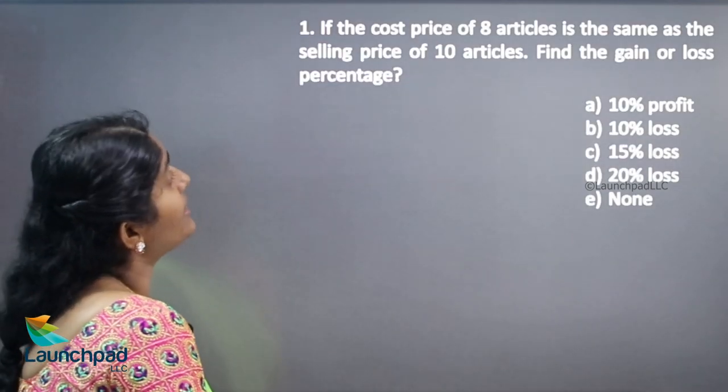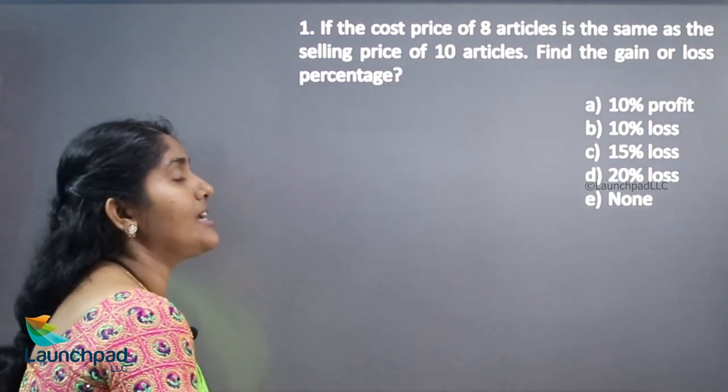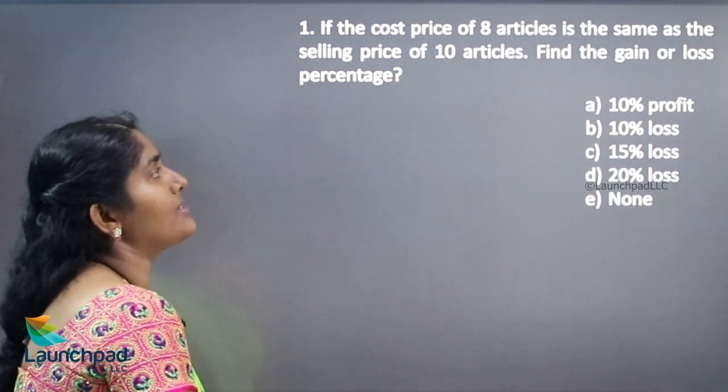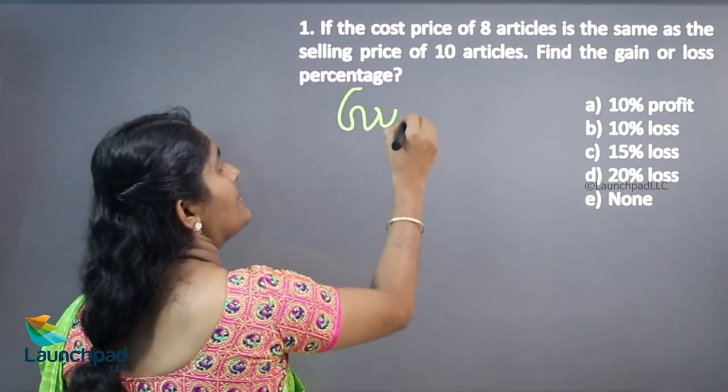And your question is, if the cost price of 8 articles is the same as the selling price of 10 articles, this is called as grouping article concepts.